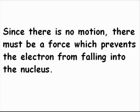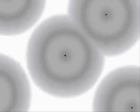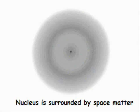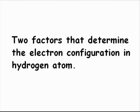Since there is no such motion, there must be a force which prevents the electron from falling into the nucleus. The volume of atoms and elastic nature of atoms — for example, gas atoms moving randomly at high speed and bouncing back when they collide — indicate that the nucleus of an atom is surrounded by a form of elastic matter. I have named this matter 'space matter.'